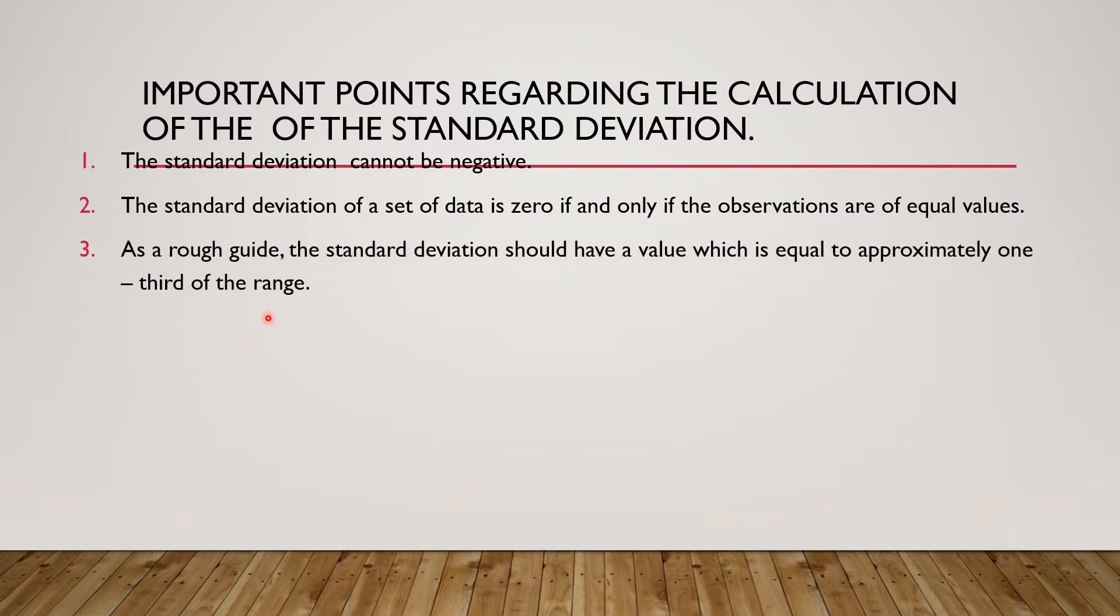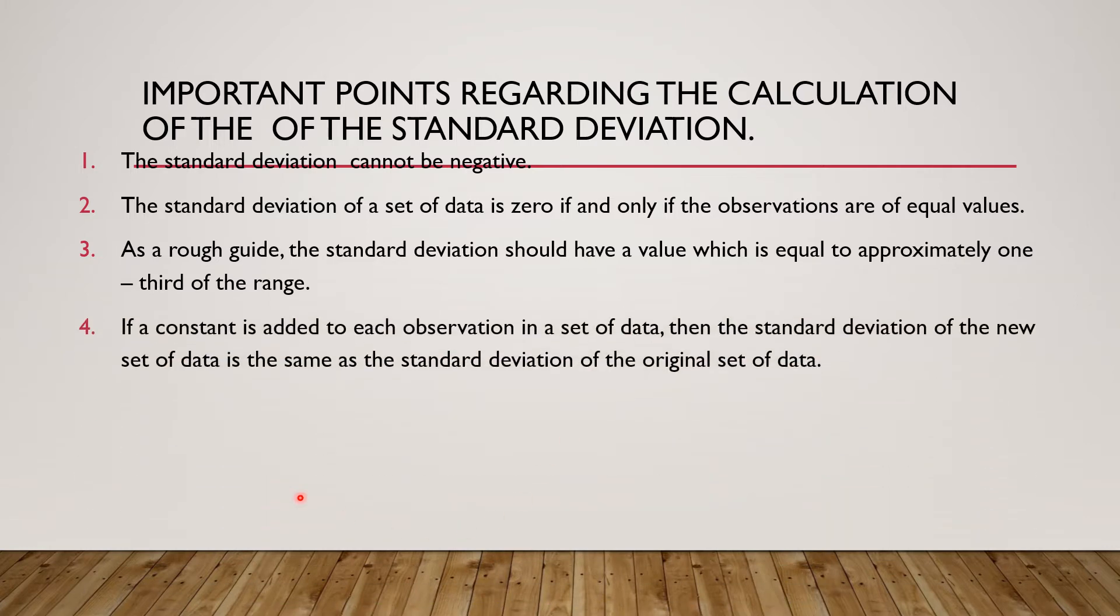3, as a rough guide, the standard deviation should have a value which is equal to approximately one-third of the range. And 4, if a constant is added to each observation in a set of data, then the standard deviation of the new set of data is the same as the standard deviation of the original set of data.